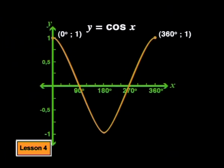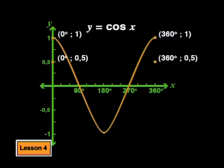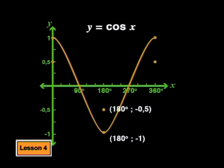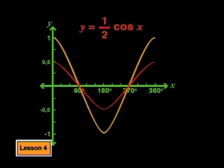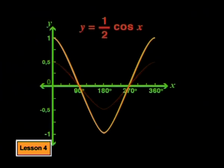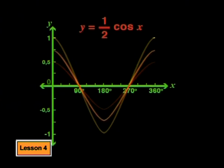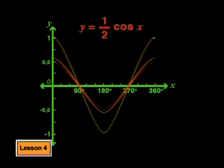The same thing happens to the cosine graph. The maximum points will be at one half and the minimum point at negative one half. The zero values on the parent graph stay the same on the new graph, giving us y equals one-half·cos(x). So the a value of one half has the same effect on both the sine graph and the cosine graph.